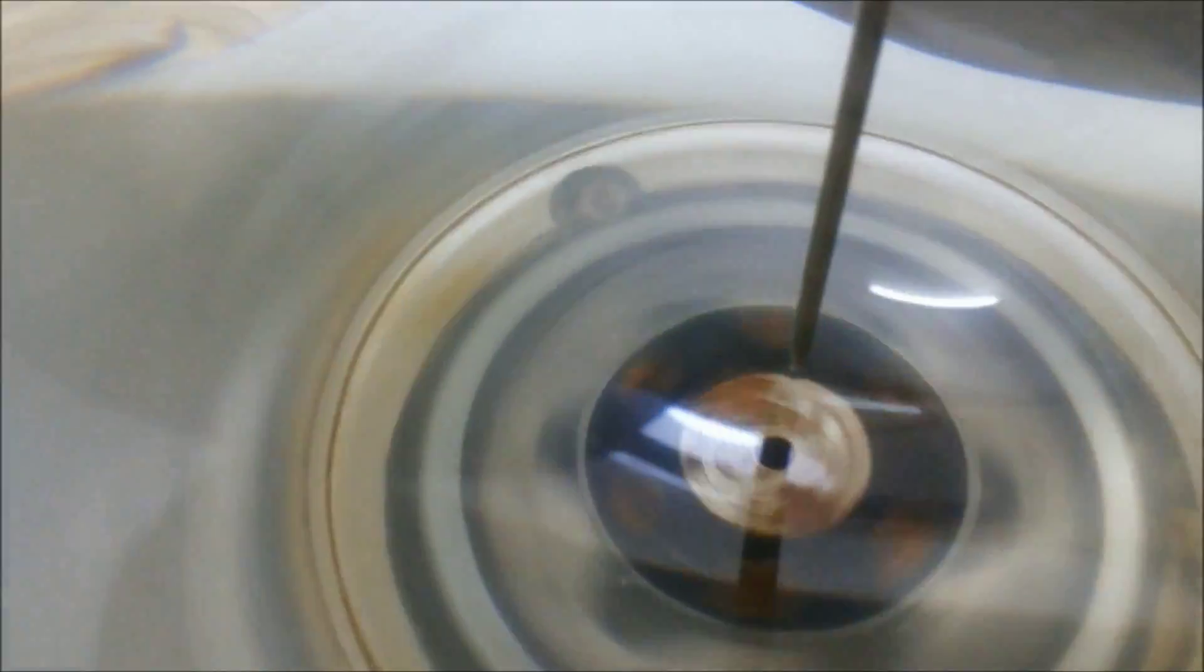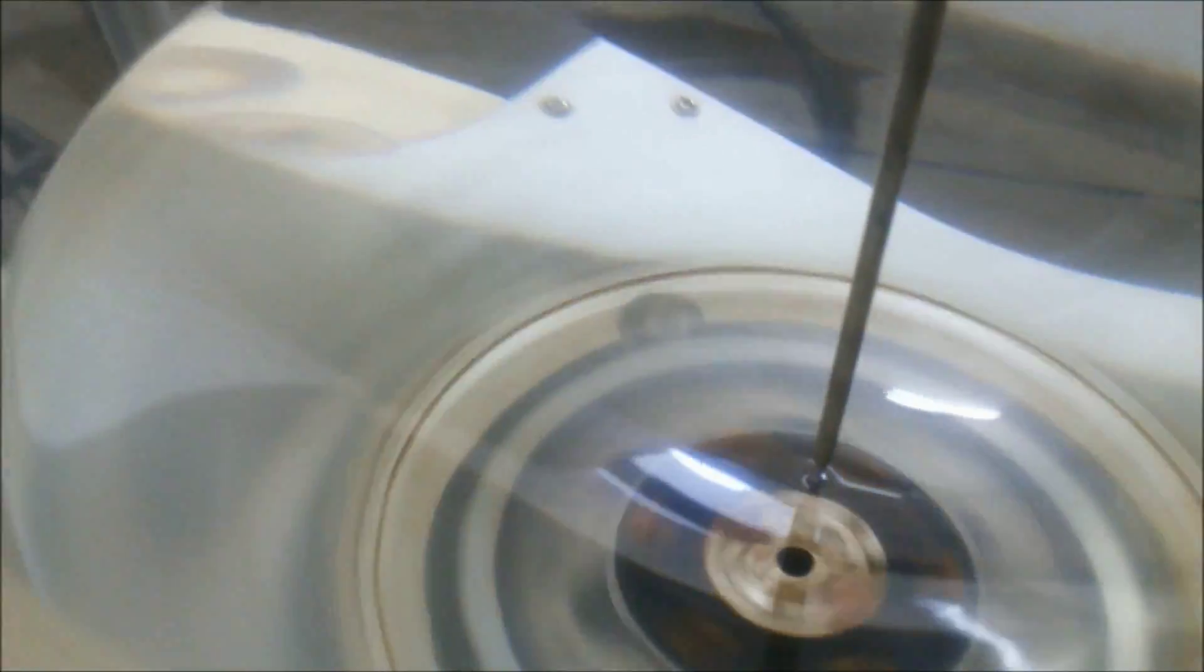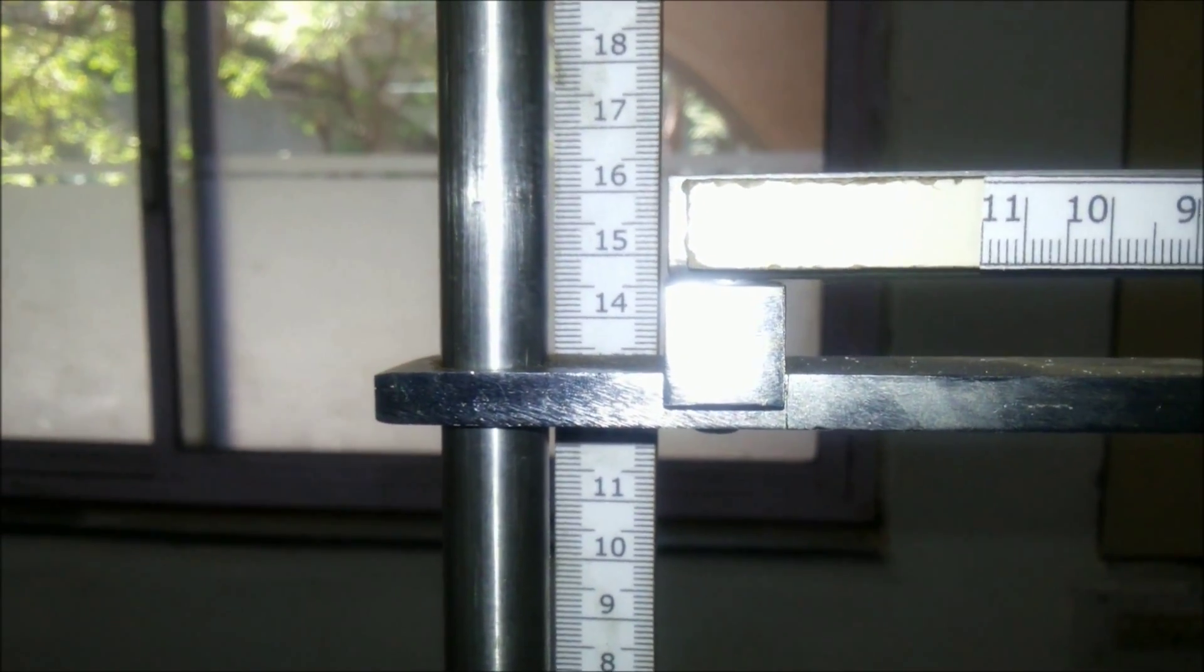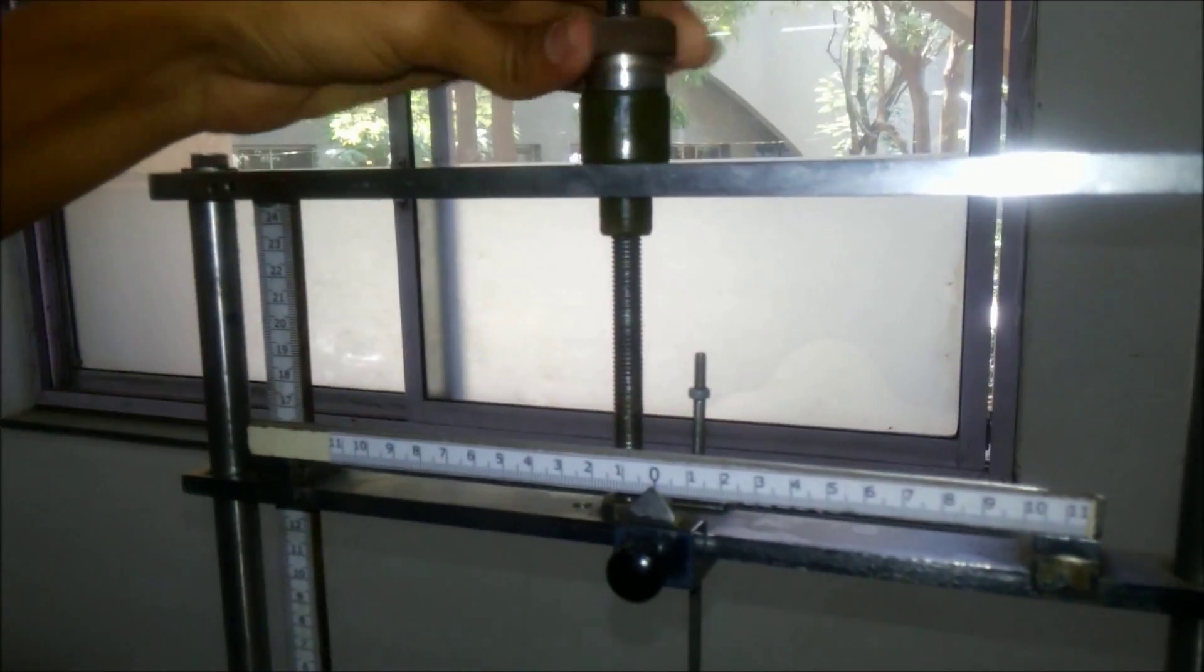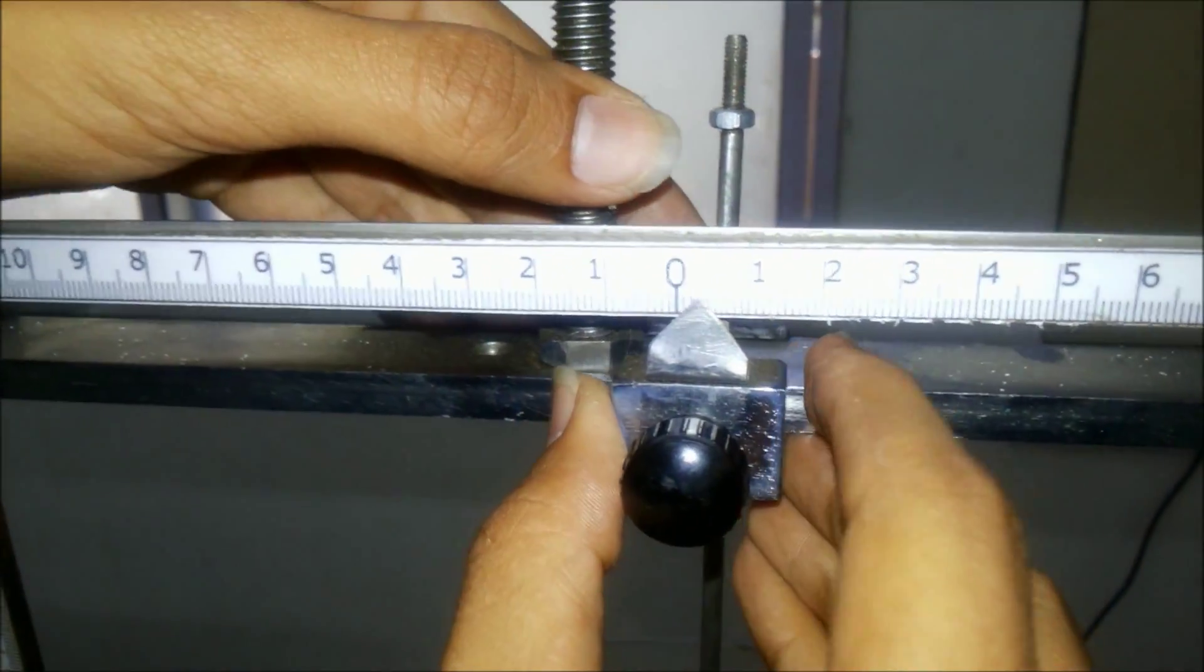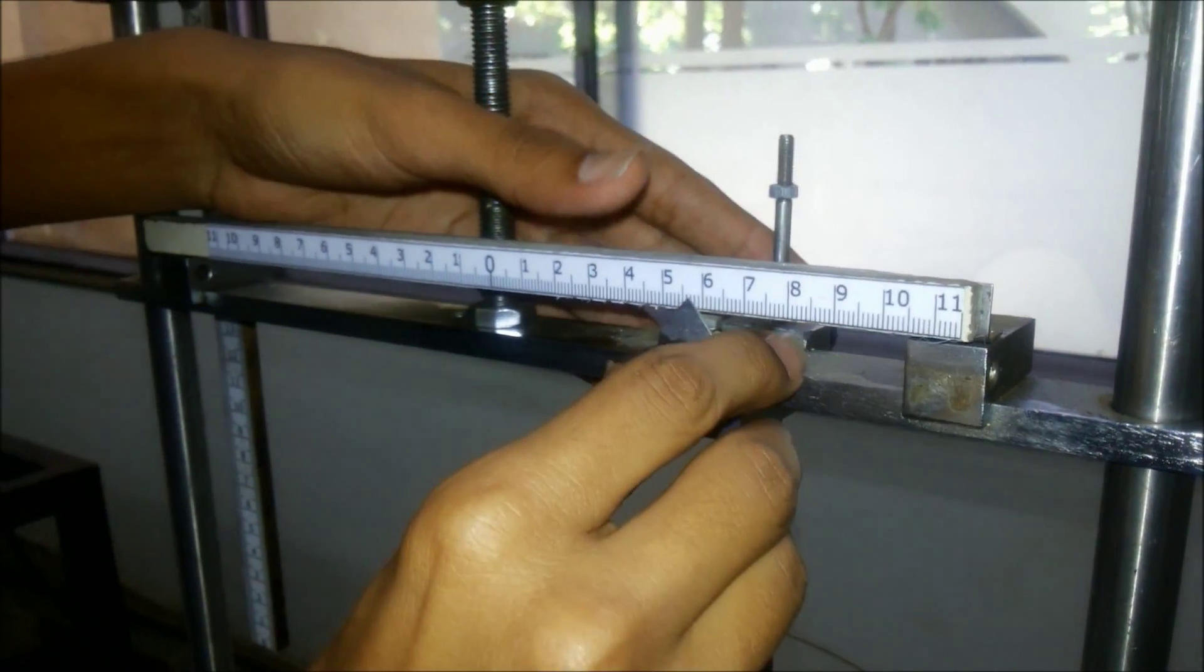To measure the depth of the vortex, we use a pointer. By lowering the pointer to the bottom most point, we measure the depth with the help of the vertical scale and the radius by horizontal scale. Readings are recorded as shown in the video by lowering the pointer tip till it touches the surface of the water, and then note down the readings of vertical and horizontal scale respectively.